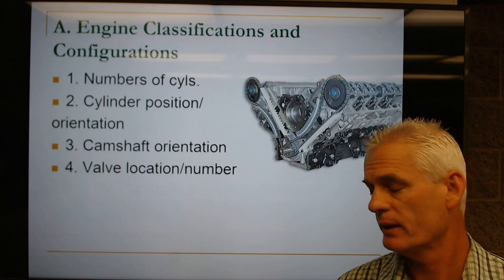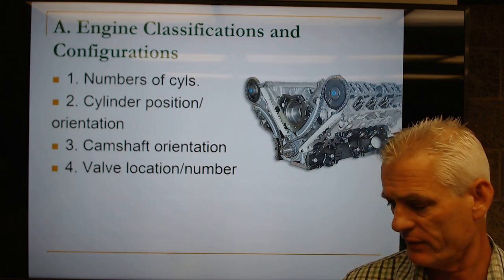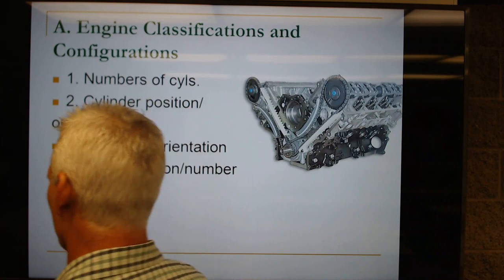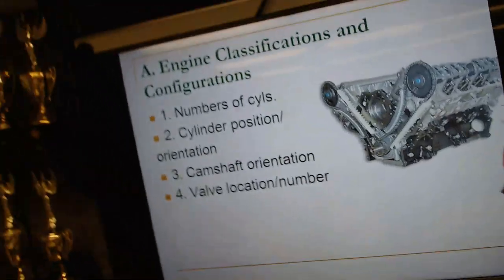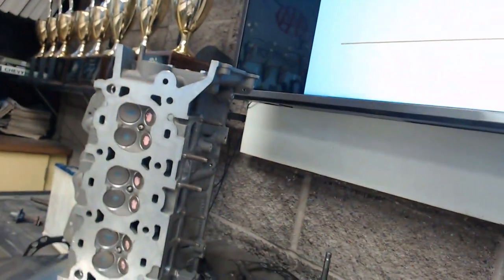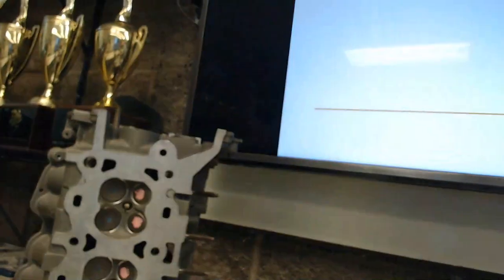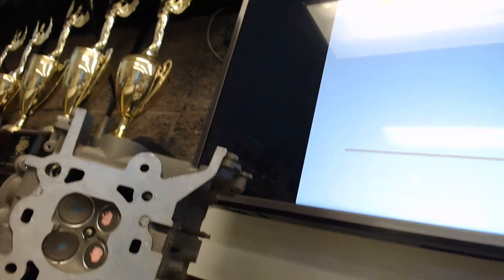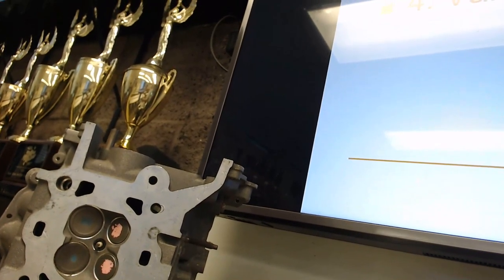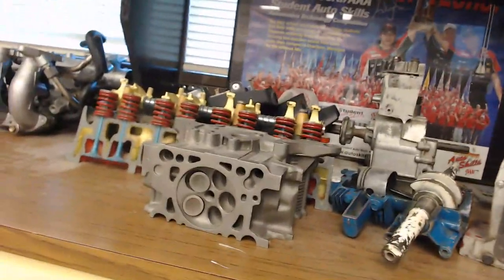Everything today is four valves per cylinder and overhead valve or overhead cam. On this V6 Ford engine cylinder head, you've got two intake valves and two exhaust valves — intake being the larger valves, exhaust being the smaller ones. There's also a five-valve-per-cylinder Volkswagen cylinder head over here.